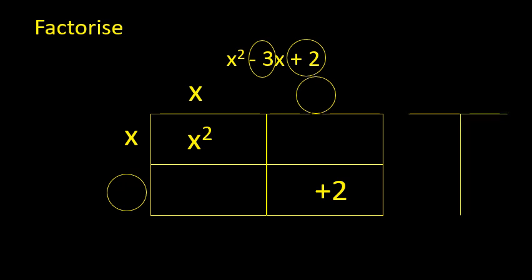At the side, I'm going to draw a table and write plus 2 above it, and think of all the numbers that multiply together to give plus 2. The first pair: plus 2 and plus 1 — they multiply to give plus 2, but when I add them, they give plus 3, so these are not the correct combination. Next, I try minus 2 and minus 1. When I multiply those, I get plus 2, and when I add them, I get minus 3. So these are the correct combination of numbers to write inside the circles: minus 2 and minus 1.